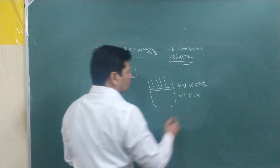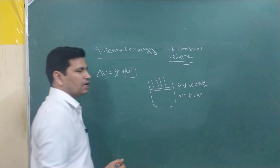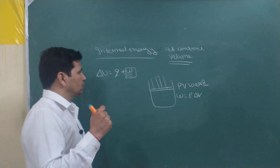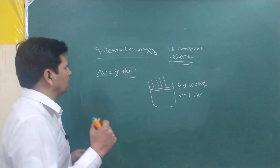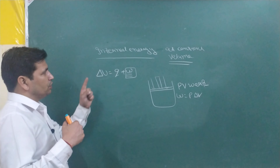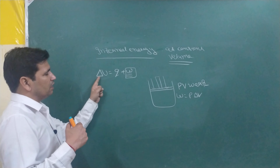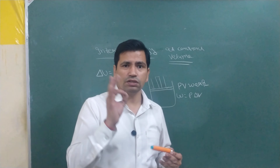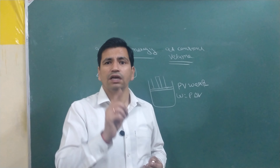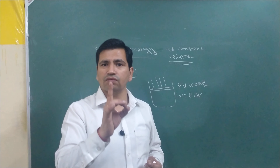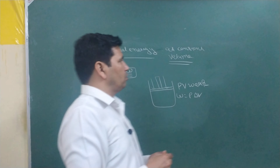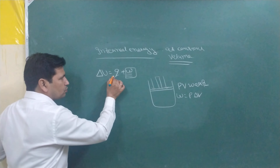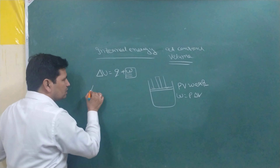Pressure-volume work can be written as W = P delta V. Now using this, we can find the internal energy. It is equal to the heat given at constant volume. So delta U is equal to Q plus W, which equals Q plus P delta V.